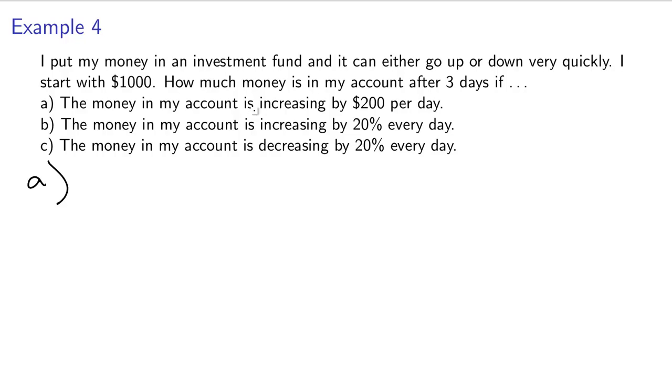So with problem A with this investor, this is a great investor. My money is just going up $200 per day. Is this an exponential function? Think about what it's telling you. It's increasing by $200 a day. That's actually just a constant rate of change, constant increments. If you think about that table where t is increasing by 1 each time, I'm just adding 200 to each of my output values on the bottom.